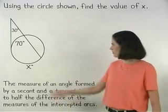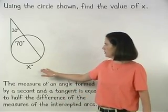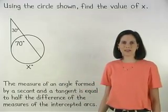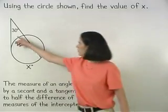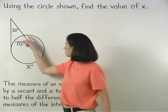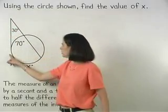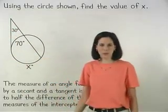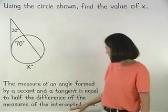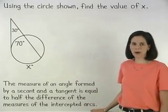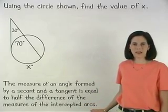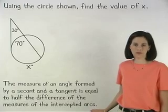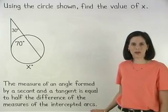In this example, we're asked to use the circle shown to find the value of x. Notice that our given angle is formed by a secant and a tangent. And remember from the previous example that the measure of an angle formed by a secant and a tangent is equal to half the difference of the measures of the intercepted arcs.